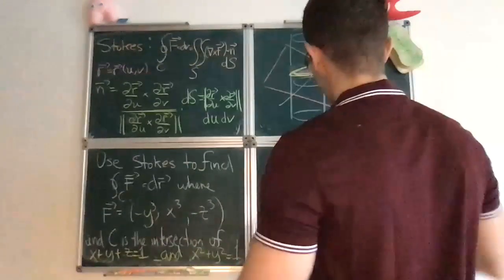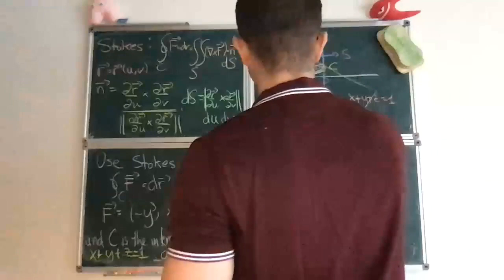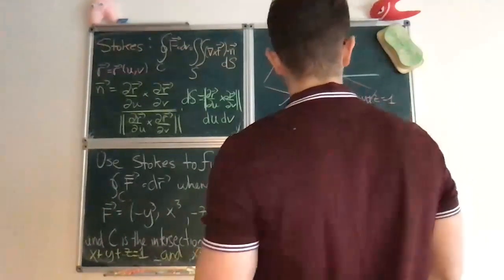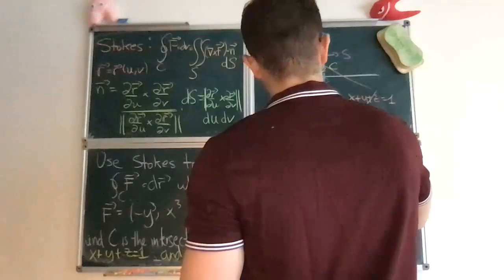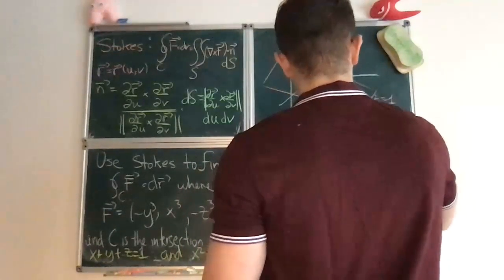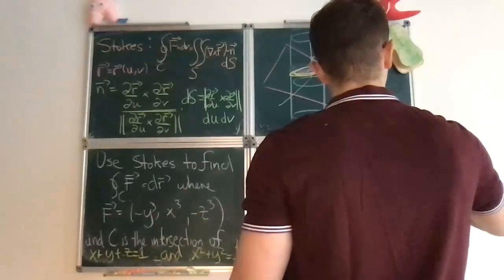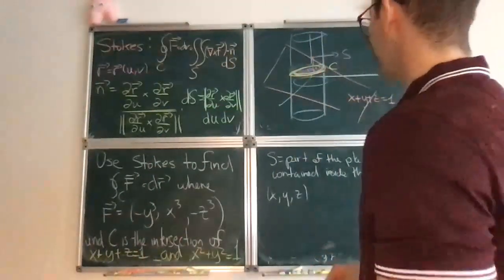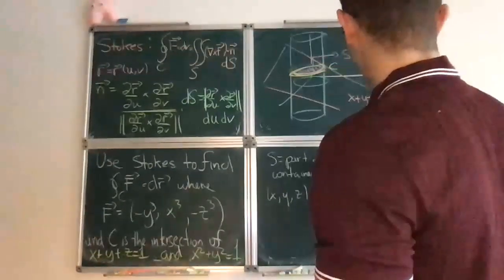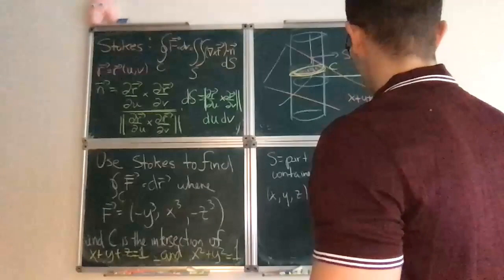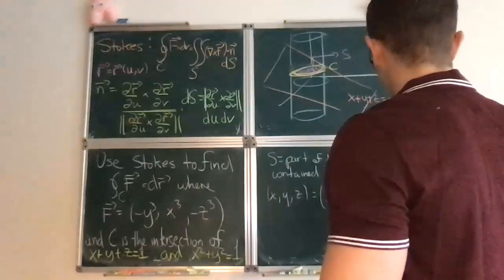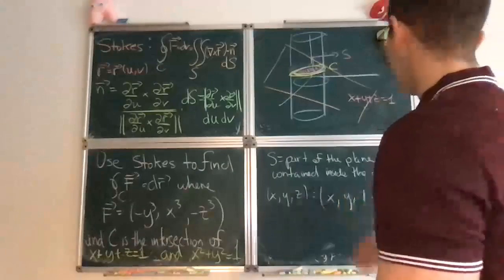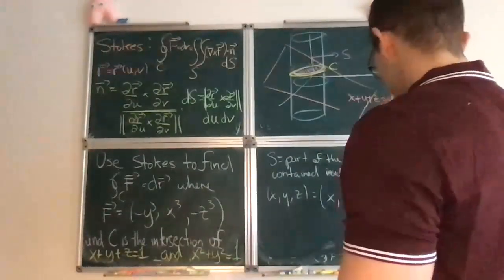And again, we have to parameterize first the surface. So s is part of the plane, the part of the plane contained inside the bottle or the cylinder. Now, the idea is that because it's part of the plane, if you take a point on the surface, it belongs to the plane, right? So you can say that it satisfies the equation of the plane, and so you can say that z equals 1 minus x minus y. And so what that really means is that any point of this purple region is specified by x and y. Once you know x and y, you know what z is supposed to be.